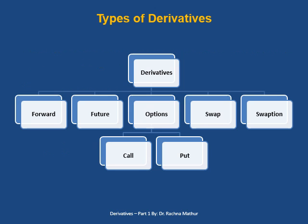Now let us see the types of derivatives market. Derivative markets are of the following types: forward contract, future contract, option, swap, and swaption.